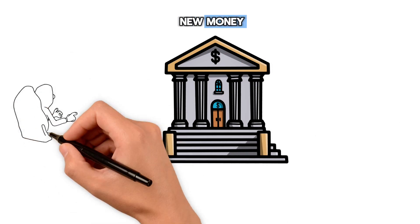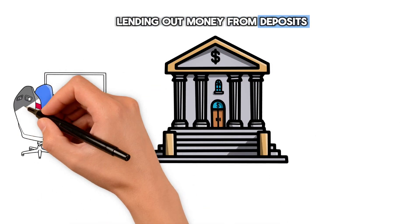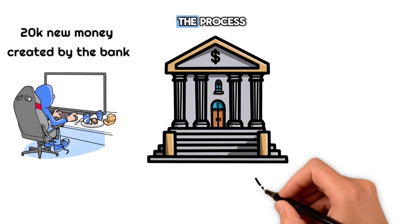2. Creation of New Money. Banks' magic: instead of lending out money from deposits, the bank simply adds £20,000 to Alice's account, creating this money in the process.